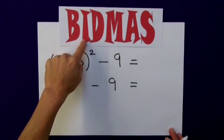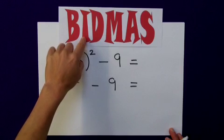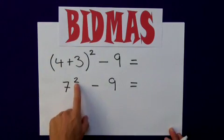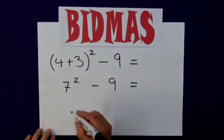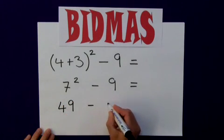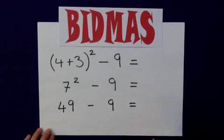The I is the next operation that I need to consider. The I was standing for indices, any powers. Well, I do have an indice here of squared. So, 7 squared is 49. Again, rewriting what I have left. Minus 9 equals, and we'll carry on.